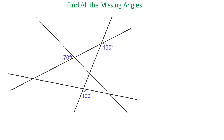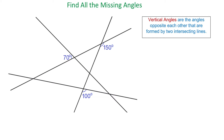Let's review a few definitions, and the first one will be the definition of vertical angles. Vertical angles are angles opposite each other that are formed by two intersecting lines. For example, the angle of 70 degrees and this one are vertical angles because they are opposite of each other. Vertical angles are always equal to each other, so if this angle measures 70 degrees, then this one is also 70 degrees.